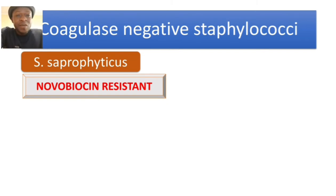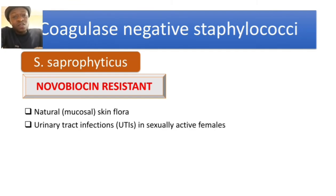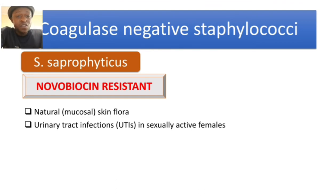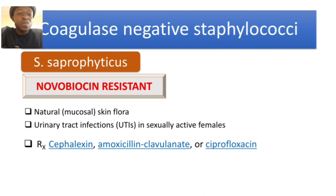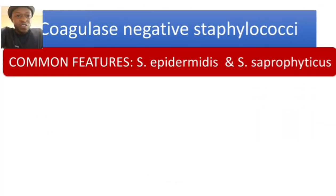Staphylococcus saprophyticus is also part of normal mucosal or skin flora and is mainly known for causing urinary tract infections, especially in sexually active females. For treatment, we generally use cephalexin — a third-generation cephalosporin — or the combination of amoxicillin-clavulanate, or ciprofloxacin.